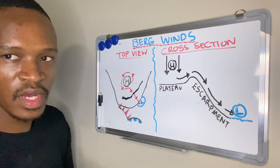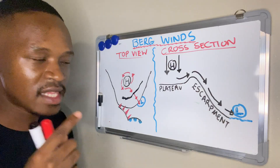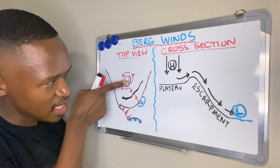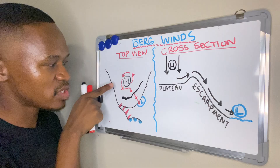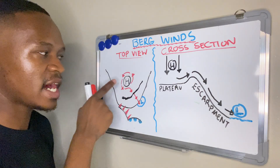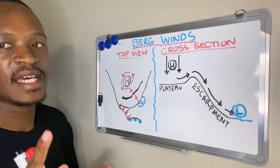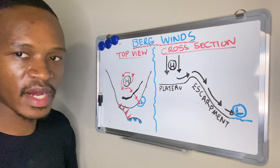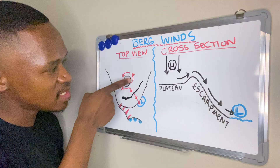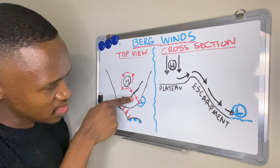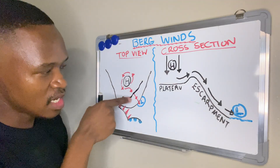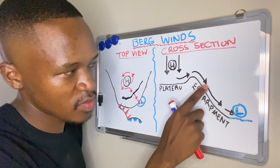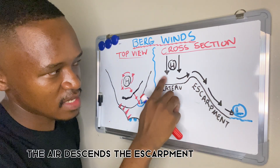One important thing about high pressure in the Southern Hemisphere is that air circulation is anti-clockwise. For a high pressure in the Southern Hemisphere, circulation is anti-clockwise, while for a low pressure it is clockwise. The air diverges towards the low pressure in an anti-clockwise direction.